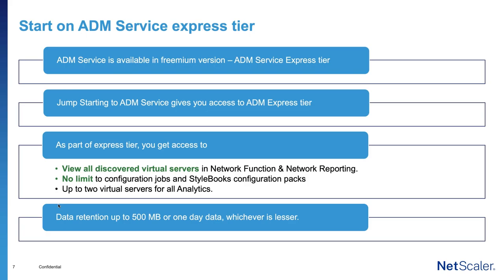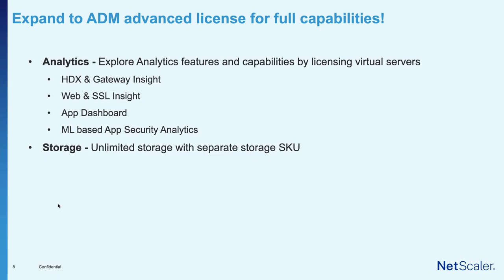If you have already used ADM service, or you are an ADM on-prem user already acquainted with analytics, then the next journey for you would be to go with the full advanced license capability — buying the number of virtual server licenses for which you need to enable analytics. This gives you HDX gateway insight, web or SSL insight, app dashboard, and ML-based security analytics. If you need more storage for features like syslog or heavy data environments, you can buy a separate storage SKU and bump up storage on the Citrix ADM service.